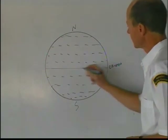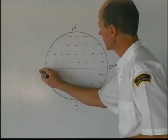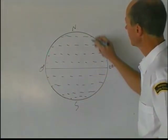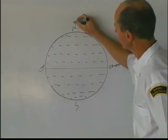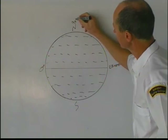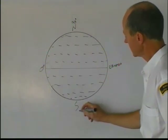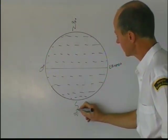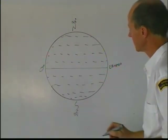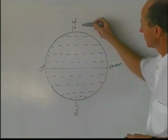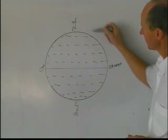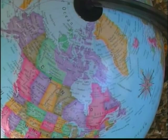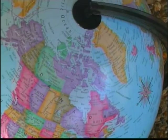The equator is 0 degrees latitude, and the North Pole is 90 degrees latitude in the north. The South Pole is 90 degrees latitude in the south. So from the equator to the North Pole is a right angle, and from the equator to the South Pole is a right angle.